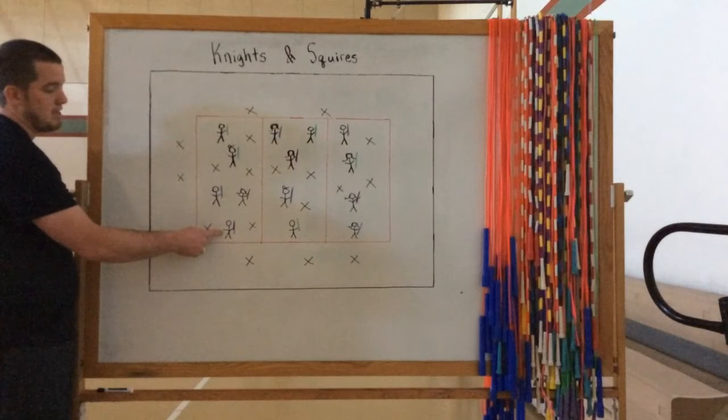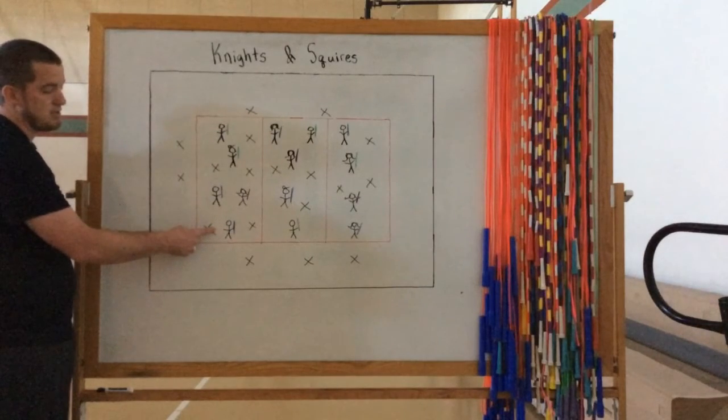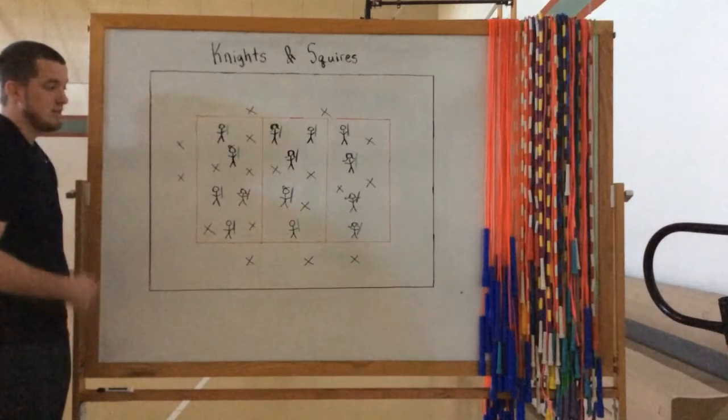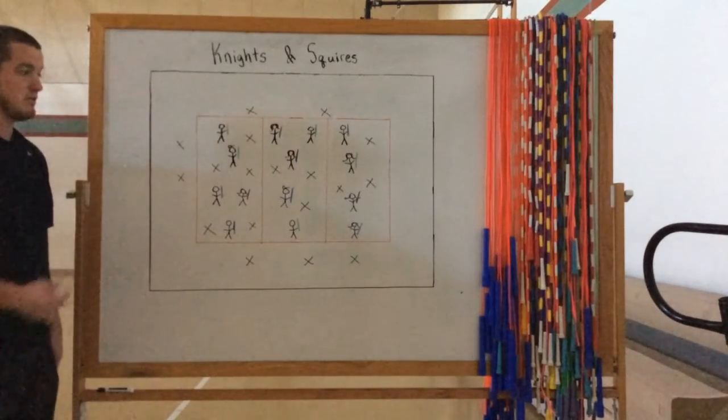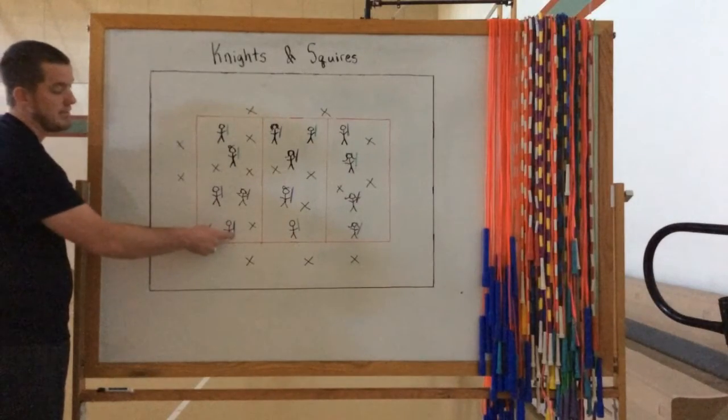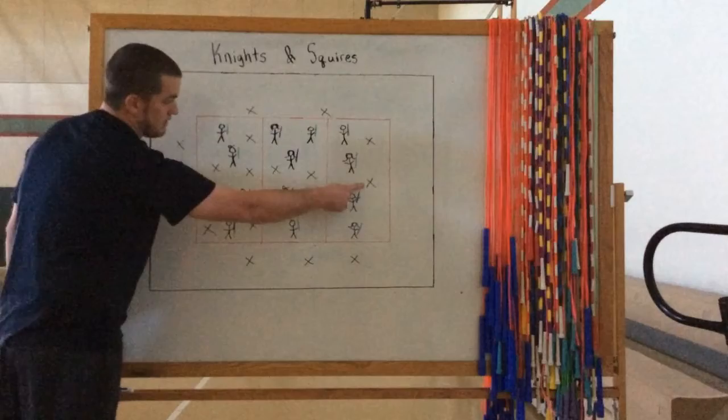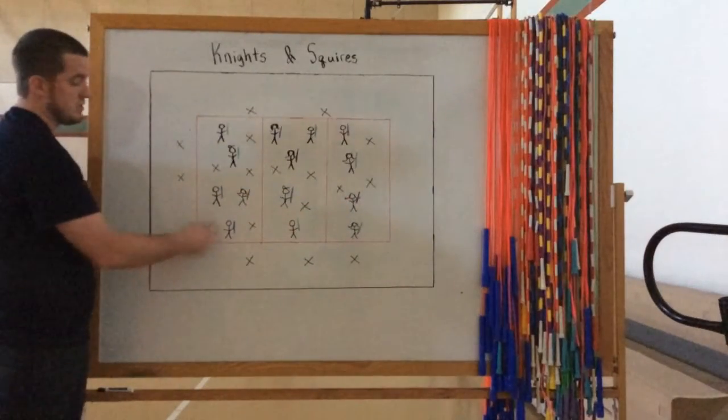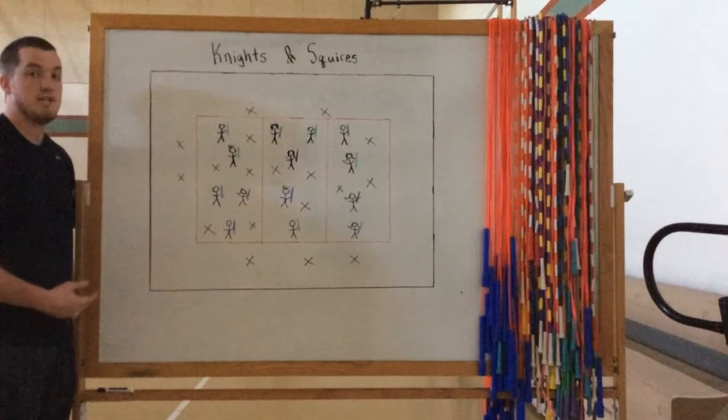the Knight is going to hand the pool noodle to the closest Squire that is sitting down. I tell the kids, you've got to repeat that rule too. The closest Squire that's sitting down, you hand the pool noodle to. Because you'll have kids that get tagged here and will run all the way over to their best friend and hand them the pool noodle. And we don't want that. We want the closest child so that everybody gets a chance to play.